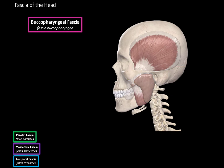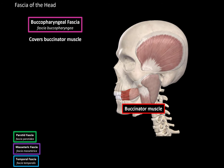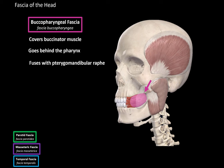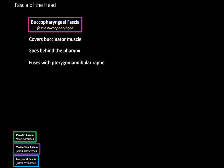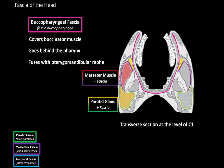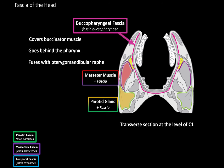Then we have the buccopharyngeal fascia. The buccopharyngeal fascia covers the buccinator muscle, and then continues backwards behind the pharynx, forming part of the posterior wall of the pharynx. It fuses with the pterygomandibular raphe — a union of the tendons of the superior pharyngeal muscles — and then continues into the fibrous tissue of the pharynx going down along the neck. In a transverse section at the level of the first cervical vertebra, we can see the parotid gland with its fascia laterally, the masseter muscle with the masseteric fascia, and the buccopharyngeal fascia starting at the buccinator and going back behind the pharynx to fuse with the pterygomandibular raphe.